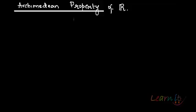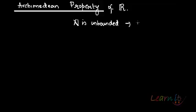Essentially, the Archimedean property of ℝ means that the subset ℕ — the subset of natural numbers, the subset ℕ of real numbers — is essentially the set of all natural numbers. That set is unbounded. It is unbounded because it is not bounded above, and that is the intuition behind the Archimedean property.